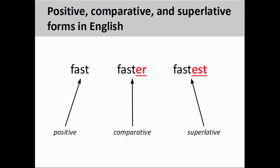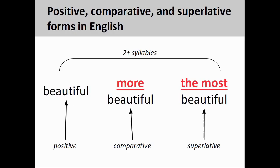As we will see in this presentation, German constructs the comparative and superlative forms of its adjectives in a similar manner. With adjectives consisting of two or more syllables, English uses a different construction to form the comparative and superlative — adding 'more' to construct a comparative and 'the most' to construct a superlative. It is very important to note that German does not form the comparative and superlative in this manner.